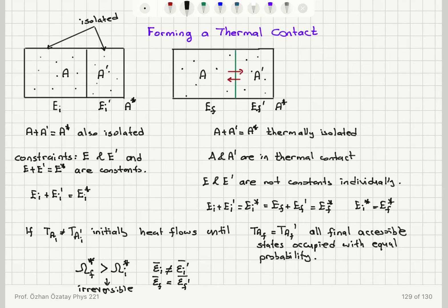In the case of forming a thermal contact between A and A prime — two individually isolated systems — the total energy must be a constant because the total system A plus A prime is isolated. When I make the thermal contact between the two, I allow energy exchange with the constraint that total energy is constant. If the initial temperatures of the two systems are not the same, heat will flow until the final temperatures are the same, implying that average kinetic energy per molecule on both sides will be equal. This corresponds to an increase in the number of accessible states, giving a more uniform distribution of energy, and therefore the process will be irreversible.